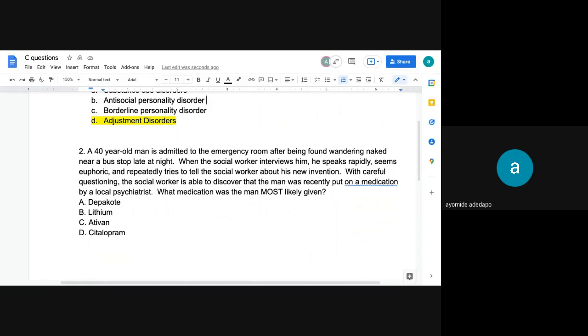So A and B is usually used for mood disorders. So treating bipolar, right? You can use A and B. So Depakote and lithium, that will be given to help treat what he's going through right now. What was he most likely given before for him to be acting like this? So that's what the question is asking you. So A and B is wrong.